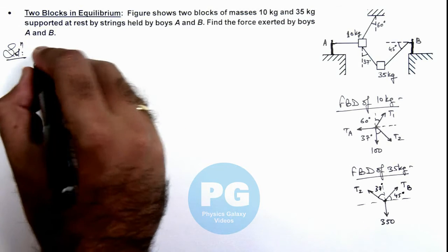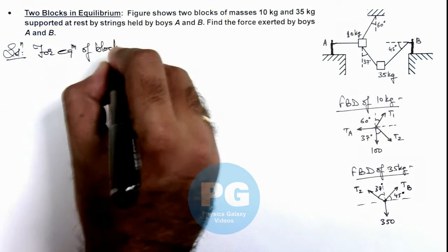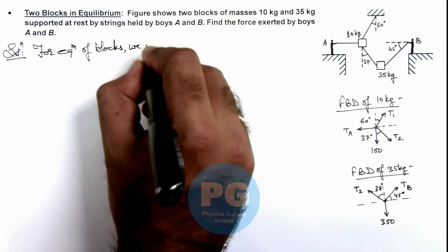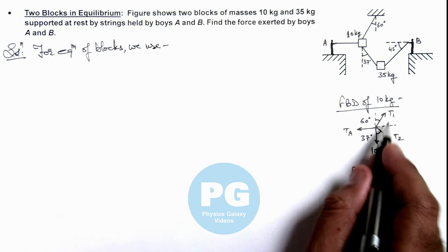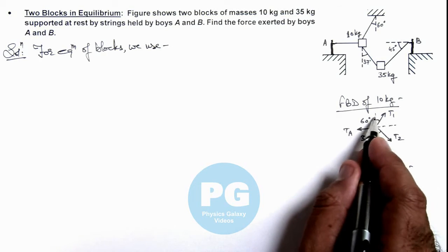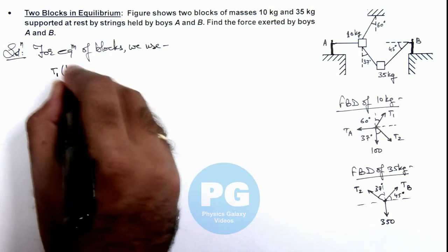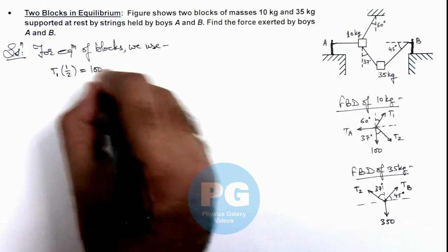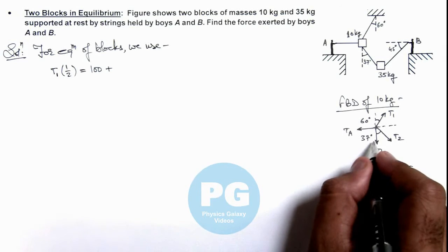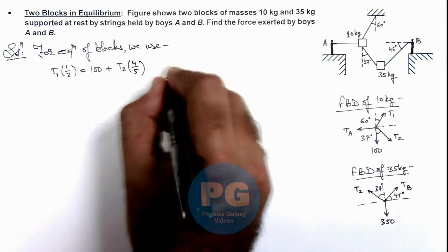We can now write the equilibrium equations for the blocks. Balancing forces in the vertical direction for the 10 kg block: T1 cos 60° = T1 × (1/2) equals the downward force of 100 newtons plus T2 cos 37°, which is T2 × (4/5). This is our first equation.